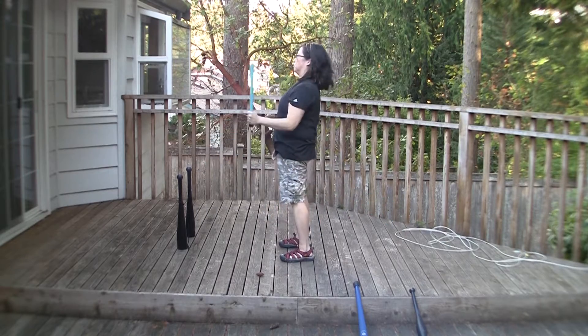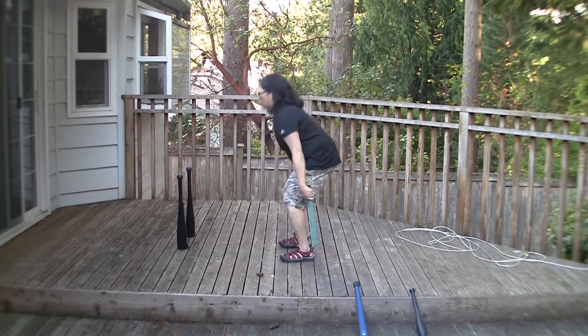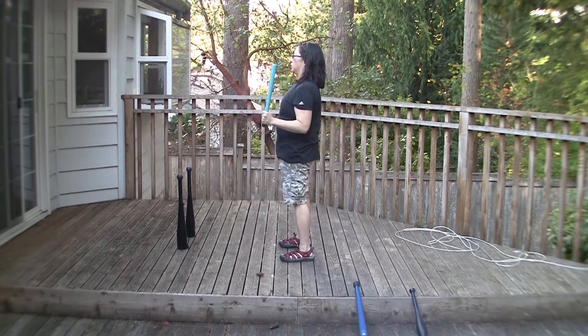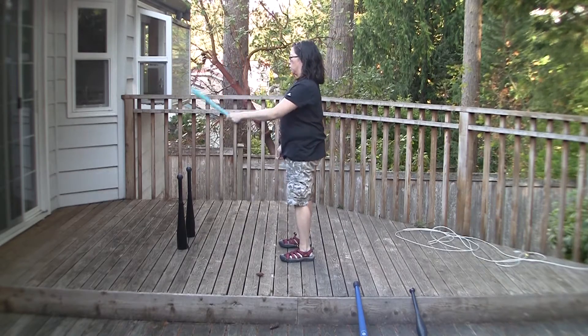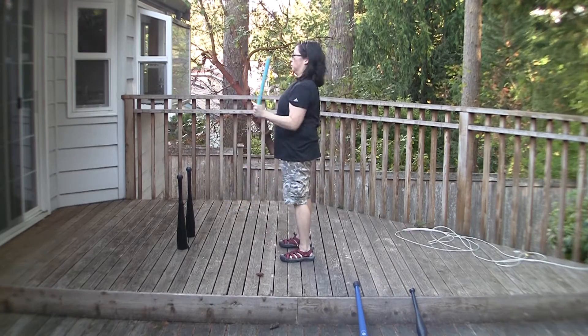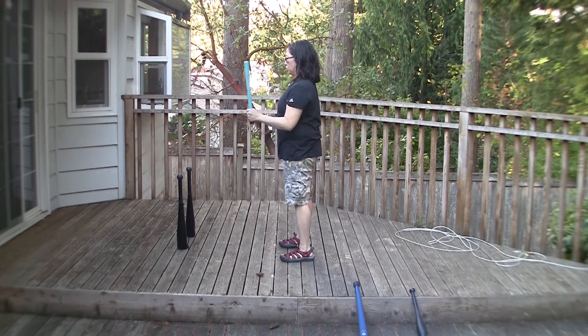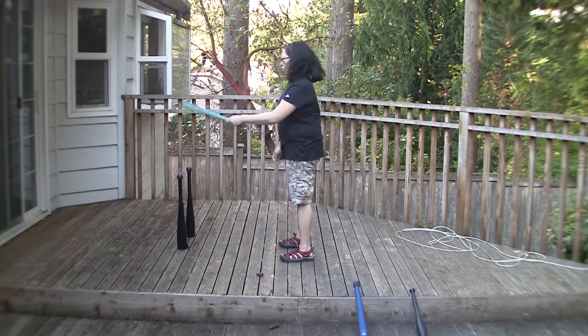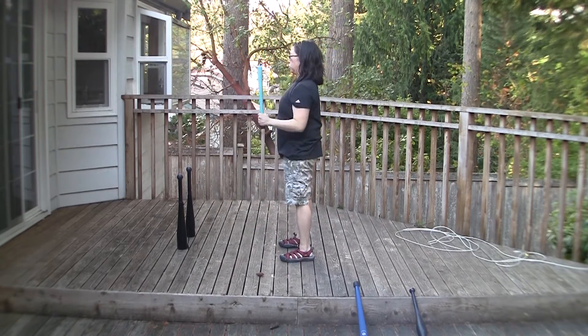The technical swipe skill occurs in the sagittal plane. Starting from the ground up, we have the dorsiflexion and plantarflexion of the ankle, knee flexion and extension, ballistic hip flexion and extension, shoulder flexion and extension, elbow flexion and extension, and wrist radial ulnar deviation.